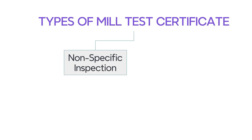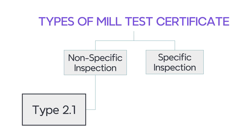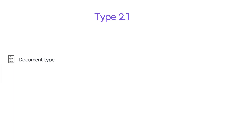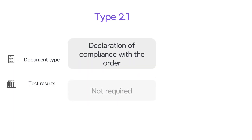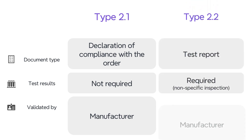Non-specific inspection is classified into two types: type 2.1 and type 2.2. Type 2.1 is a declaration of compliance with the order, issued by the manufacturer, without any test results. Type 2.2 is a test report, issued by the manufacturer, with non-specific test results.